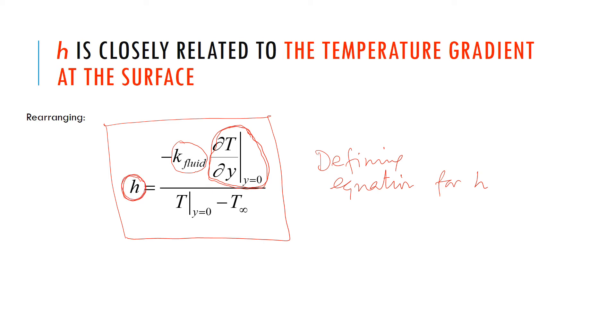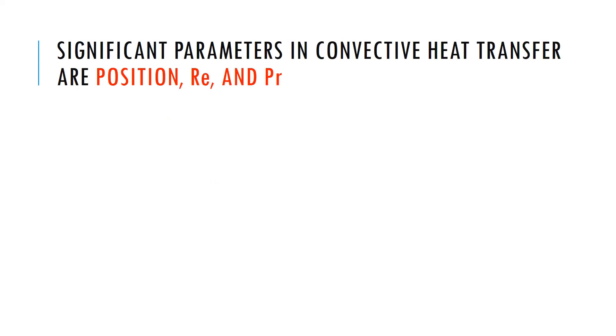You notice that h is closely related to the temperature gradient at the surface. That kind of makes sense because temperature gradient multiplied by the thermal conductivity gives heat flux and h measures heat flux.